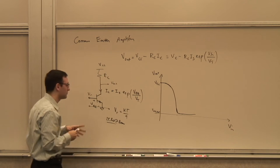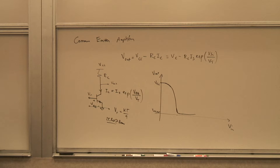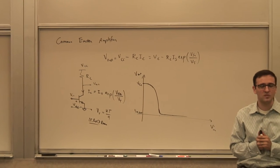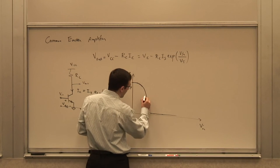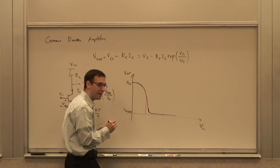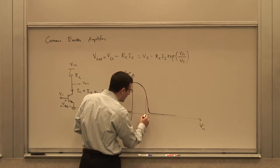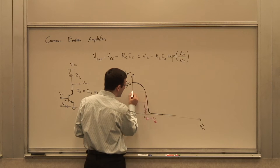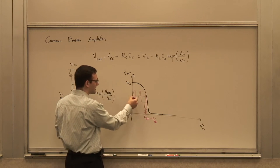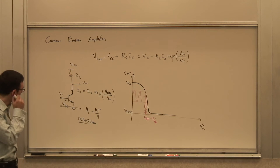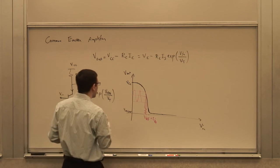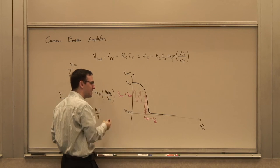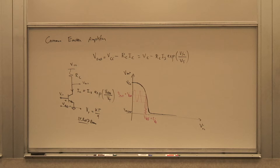So is this an amplifier? Yes, depending on where you look at it. If I apply a DC bias level VBP to the input and then add a small AC variation on top of that, I'll see that variation gets amplified at the output — this is the DC part and this is the AC part operating around my quiescent point.